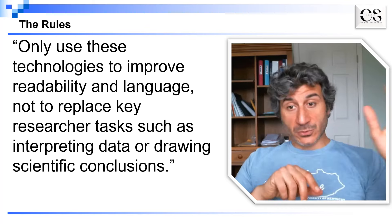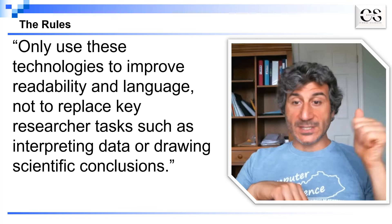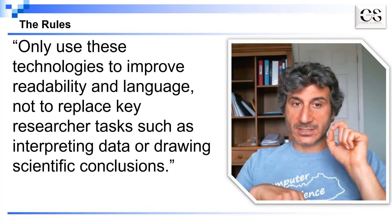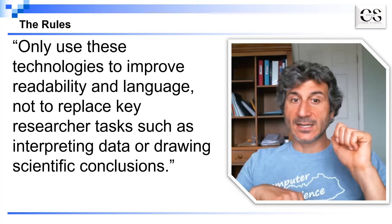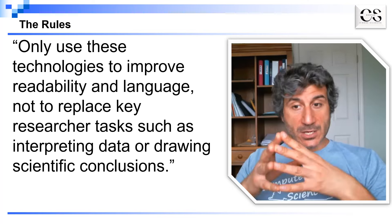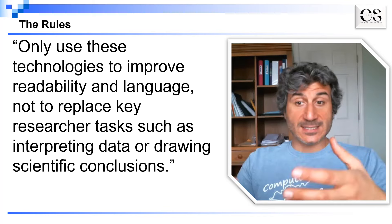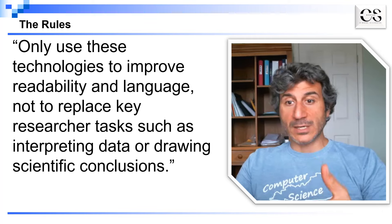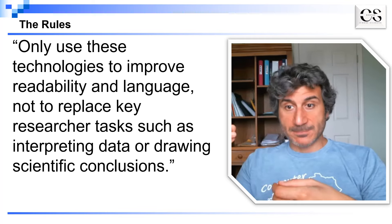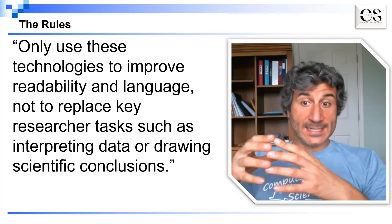The first rule that Elsevier provides is that we can only use these technologies to improve readability and language, not to replace key research tasks such as interpreting data or drawing scientific conclusions. Basically, what they're saying is that we cannot use these tools to generate science. They can assist us in the writing process, but purely from a writing perspective — not from an intellectual perspective of generating concepts, generating ideas, or analyzing data.